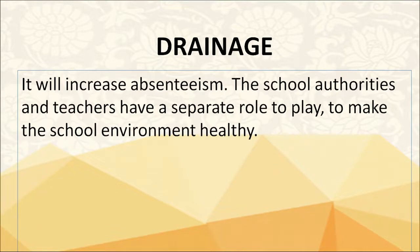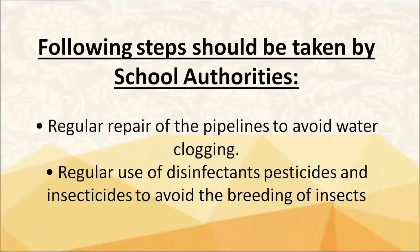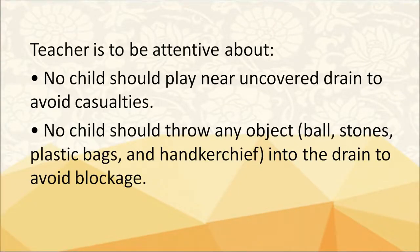If a child falls sick, he will be absent regularly. School authorities and teachers have a role to make the school environment healthy. Following steps should be taken: covering of drains to avoid casualties, regular cleaning of drains by local bodies to avoid blockage, regular repair of pipelines to avoid water clogging, and regular use of disinfectants, pesticides and insecticides to avoid the breeding of insects. Teachers should ensure no child plays near uncovered drains, and no child throws objects like balls, stones, plastic bags or handkerchiefs into the drain to avoid blockage.